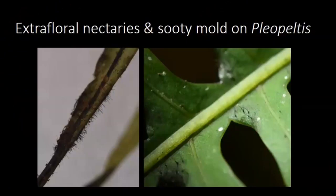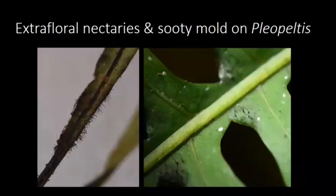Another really fun aspect of Pleopeltis biology is extra-floral nectaries. This little structure here is the extra-floral nectary on Pleopeltis plebeia. We don't know why they have nectaries — no one really knows. It's very common throughout the genus, and we do know that every time we see extra-floral nectaries in Pleopeltis, they are always colonized by a sooty mold; those black hair-like structures are fruiting bodies of sooty mold. We don't know if it's all the same sooty mold or if this is a mutualistic relationship, but it's super cool.